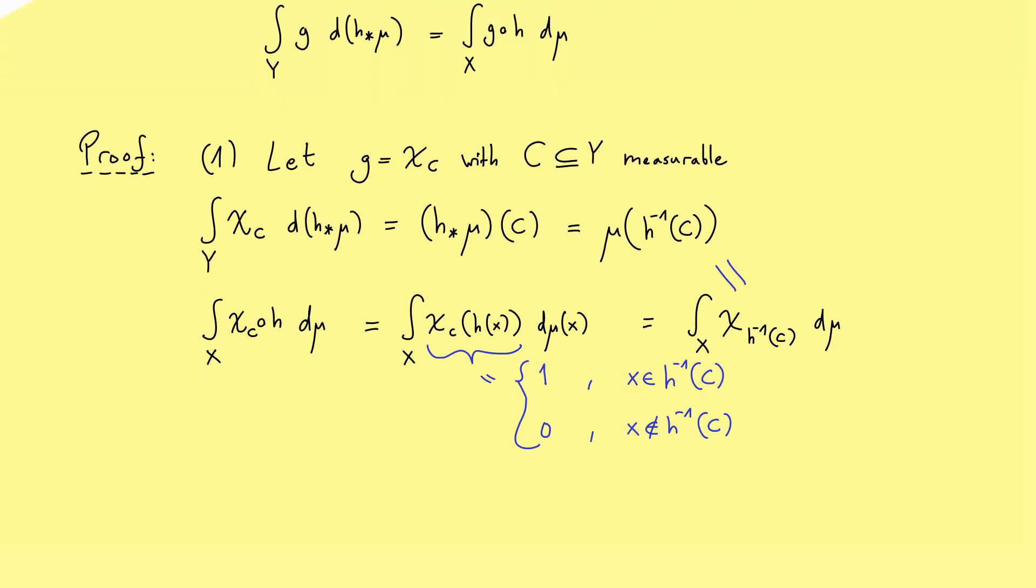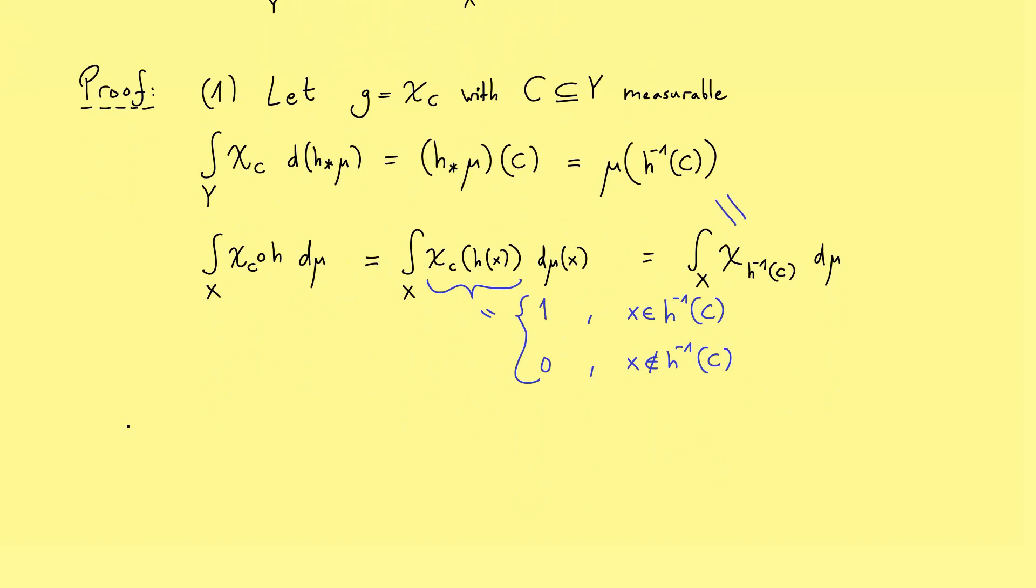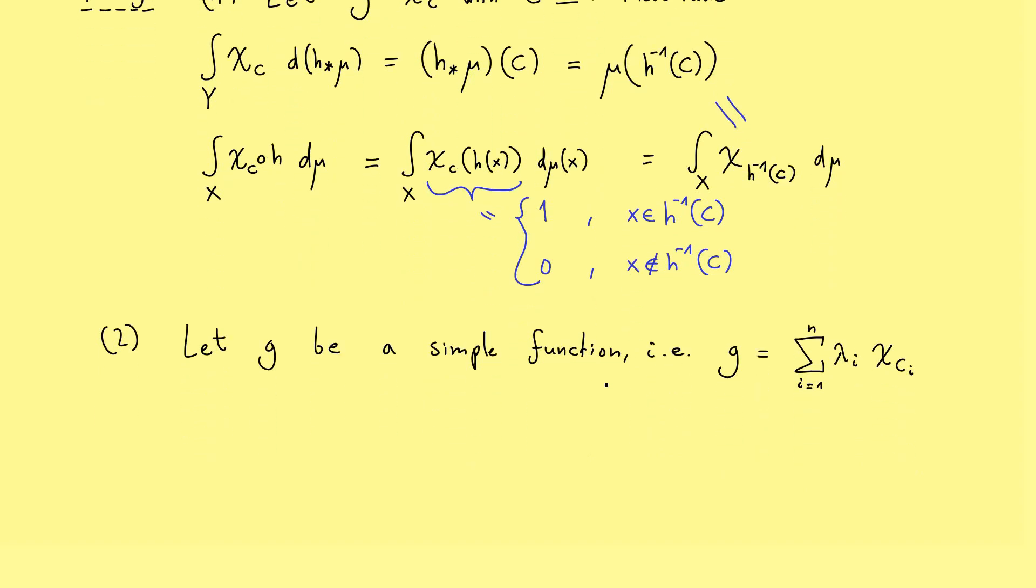Now we have proven the substitution rule for characteristic functions. And in the second case, we go over to simple functions. This means that our function g is now a linear combination of characteristic functions. Hence, we can write it as a sum i = 1 to n, where we have coefficients λ_i and sets C_i. Okay, so in this case, you may immediately see that we can just use the first case and the linearity of the integral.